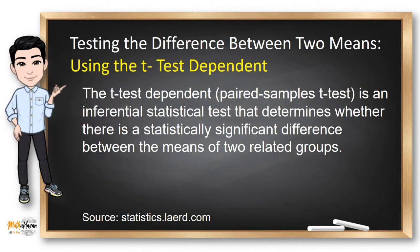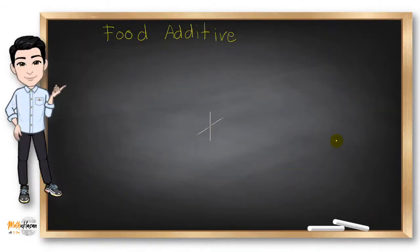The t-test dependent, or sometimes called paired sample t-test, is an inferential statistical test that determines whether there is a statistically significant difference between the means of two related groups.